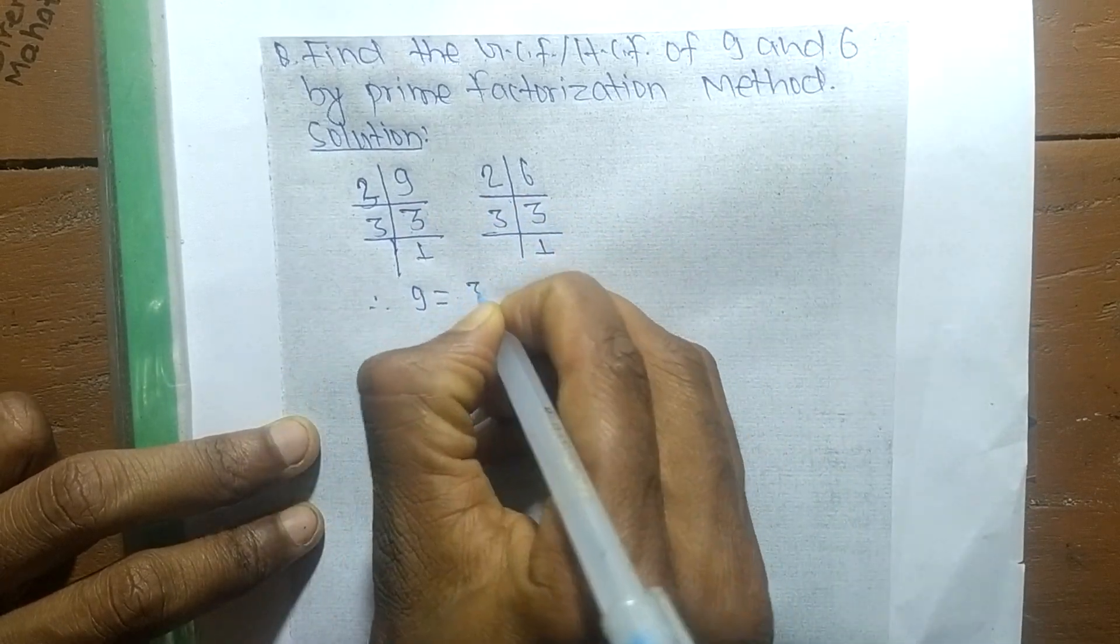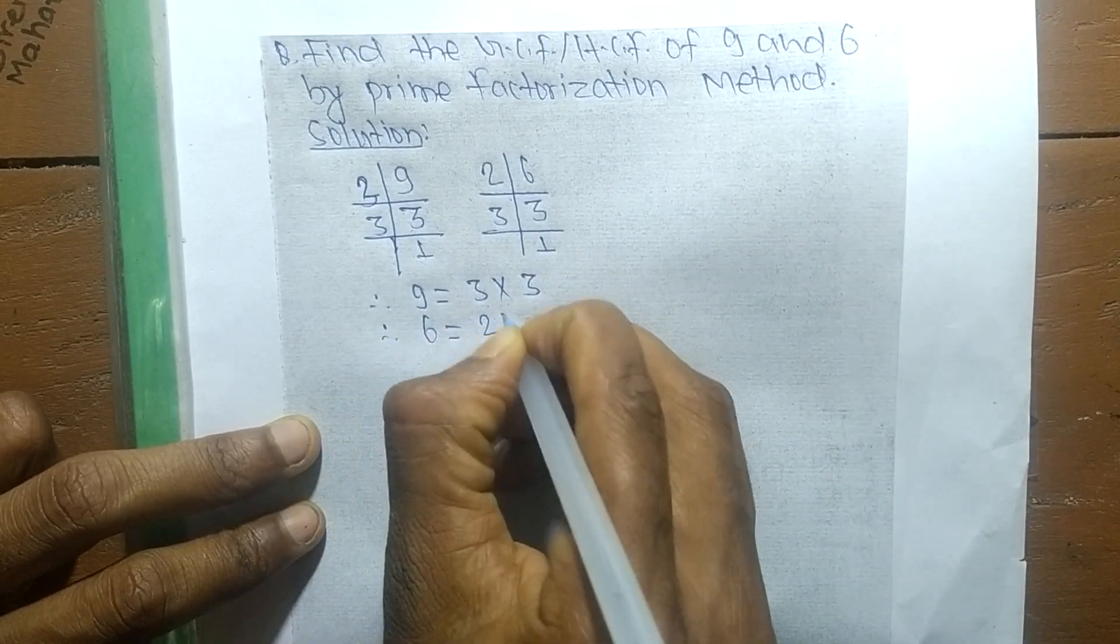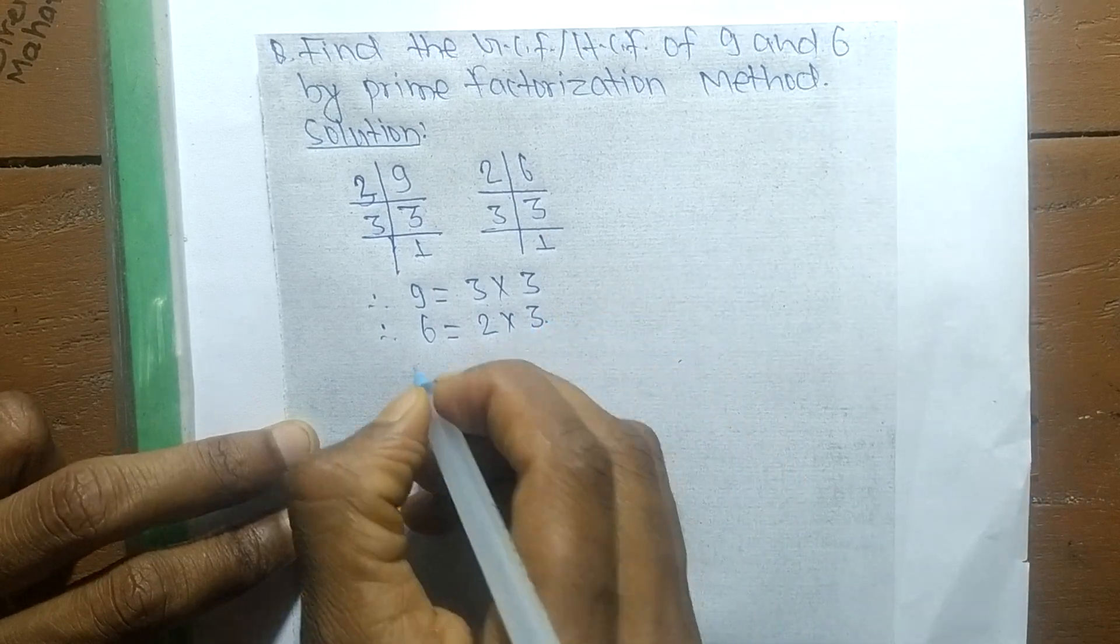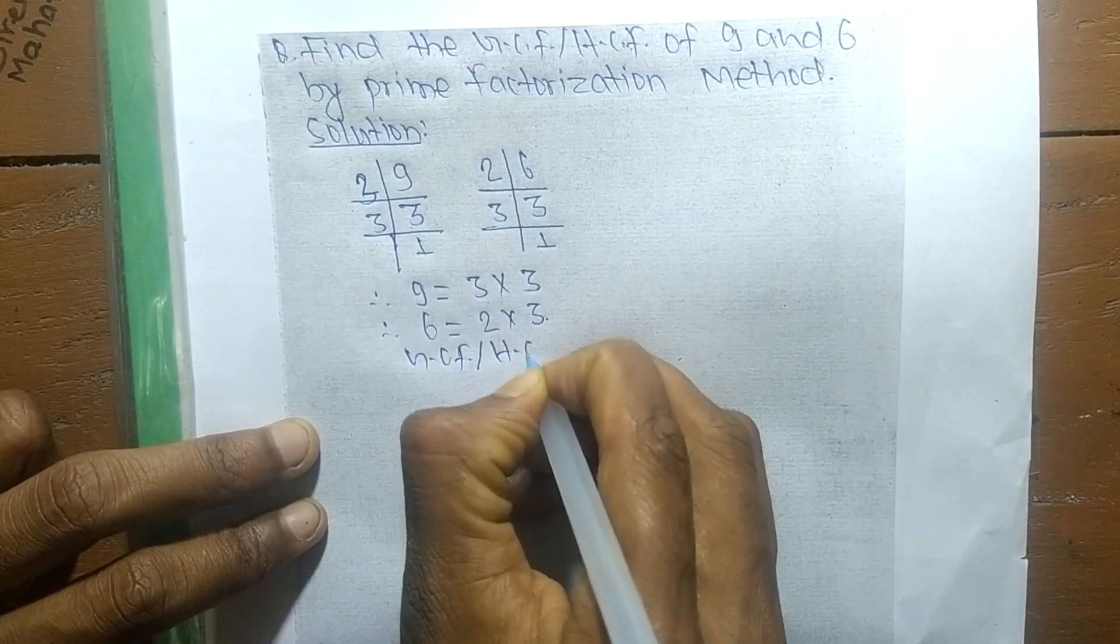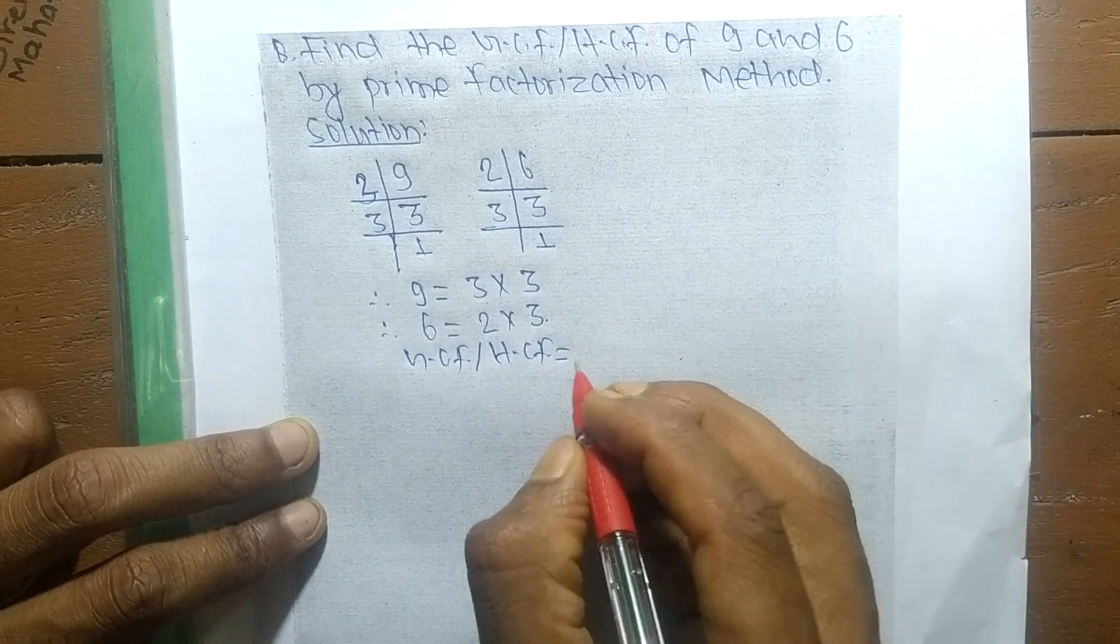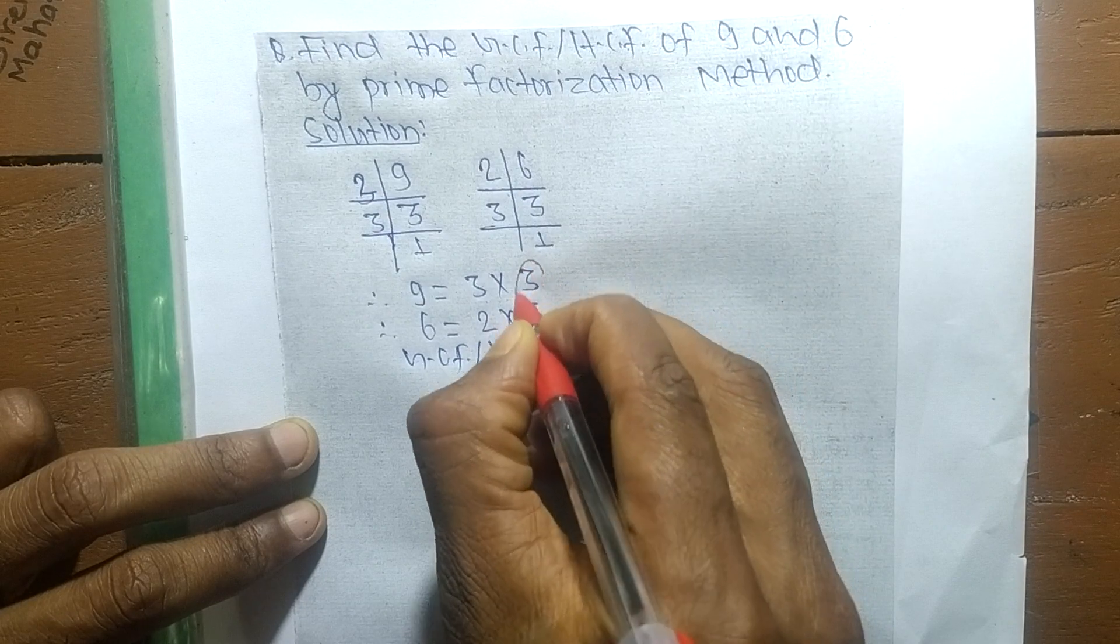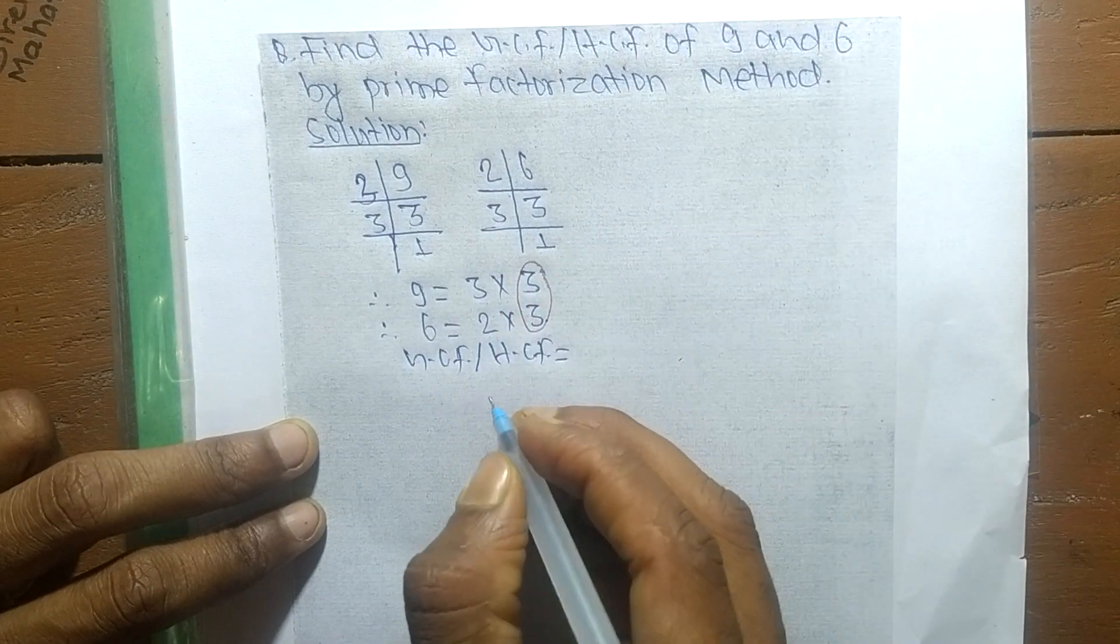From these prime factors, 9 equals 3 times 3, and 6 equals 2 times 3. So GCF or HCF equals the common factors in both. Here it is 3, and GCF is the product of only common factors.